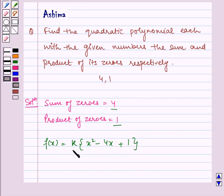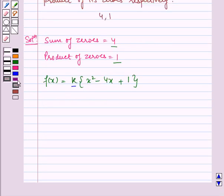So if we assume this k to be 1 to satisfy our product of zeros and sum of zeros, we get our required polynomial as f(x) is equal to x square minus 4x plus 1.